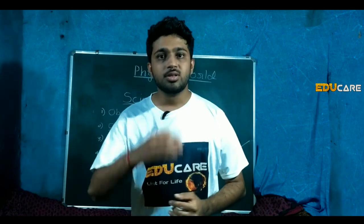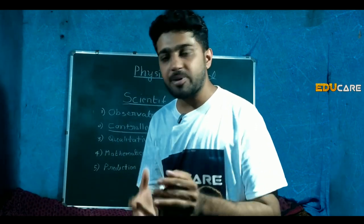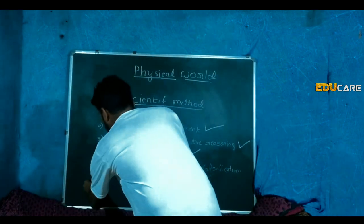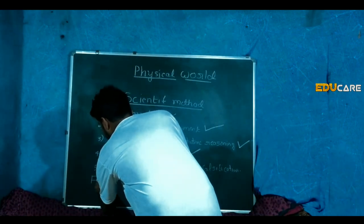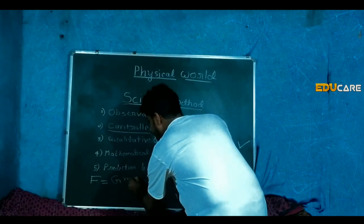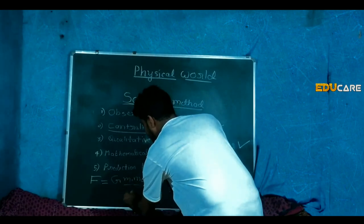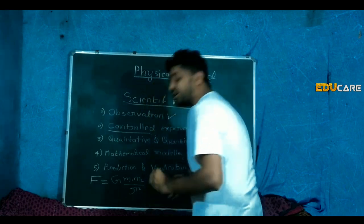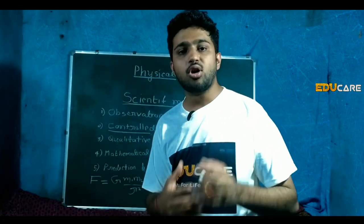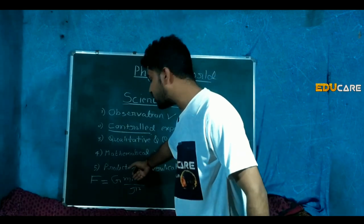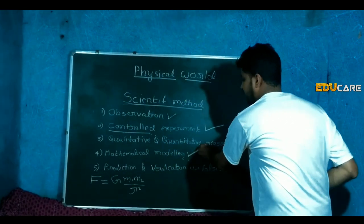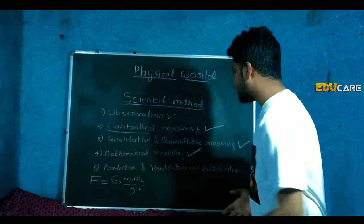The next step is mathematical modeling. After the qualitative and quantitative reasoning, we have to express the theories or laws in mathematical form. For example, Newton's law of gravitation is written as F = G × M1 × M2 / R². Here the theory is expressed in mathematical form, so this step is called mathematical modeling.